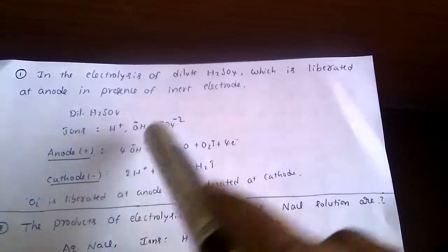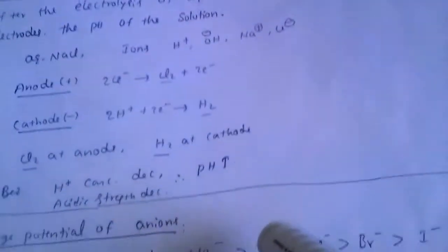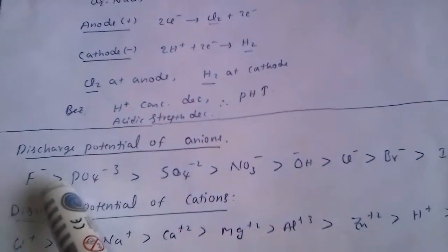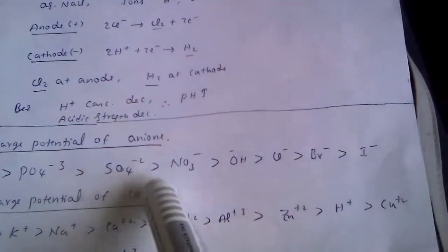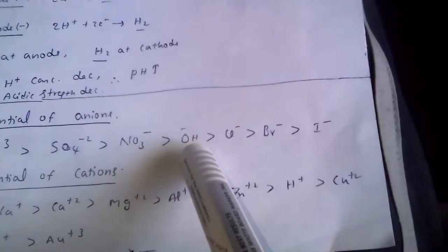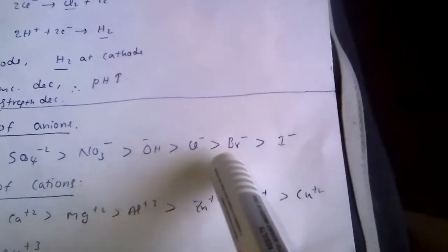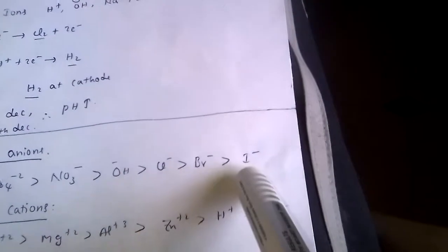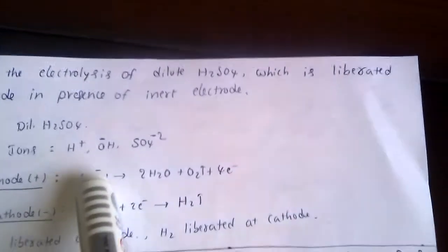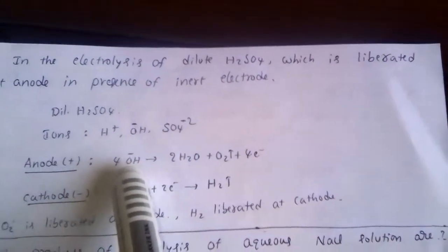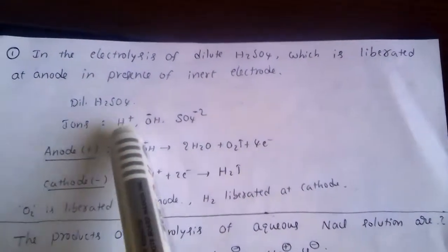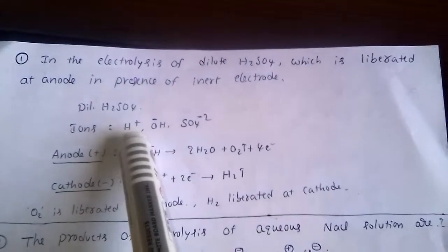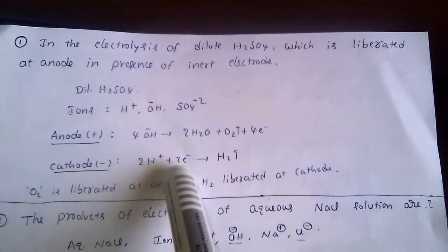The discharge potential order of anions is: F⁻ > phosphate > sulfate > nitrate > OH⁻ > Cl⁻ > Br⁻ > I⁻. So OH⁻ has less discharge potential and discharges first, liberating oxygen gas at the anode.